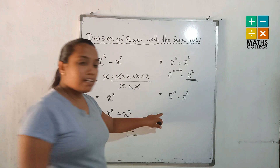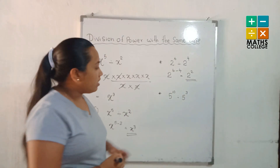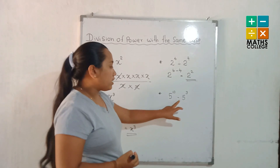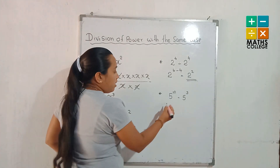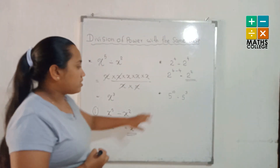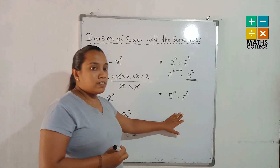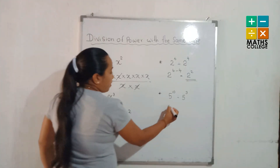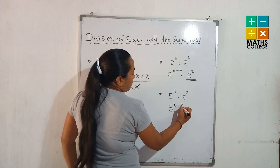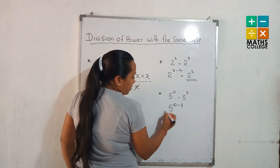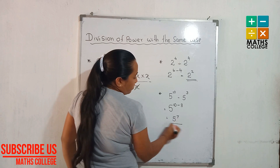Another example. The given powers are the same basis, and the given mathematical operation is division. When we divide powers with the same basis, we subtract the indices: subtracting 3 from 10. The answer is 5 to the power 7.